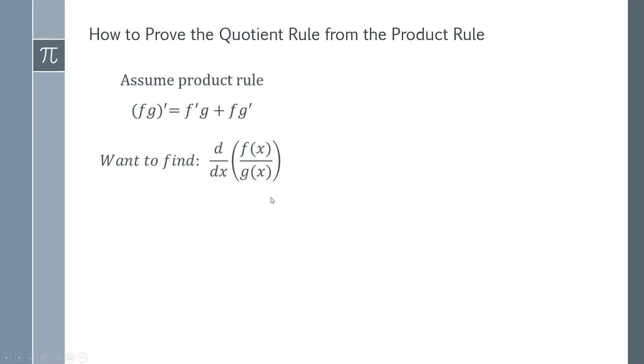We want to find the derivative of f(x) divided by g(x). This is a quotient because it's a division. However, you can't use the quotient rule to find that because the point is to prove the quotient rule. What you can do is rewrite this in a way that makes it into a product.